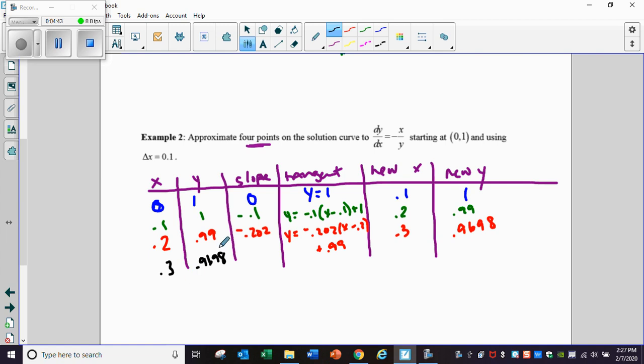Plug these two values into my dy/dx, and I'm going to get negative 0.3093. The tangent line equation will then be negative 0.3093 times (x minus 0.3) plus 0.9698. The new x is the old x plus another 0.1. Plugging in 0.4 into this tangent line equation, I get my final point of 0.93886.